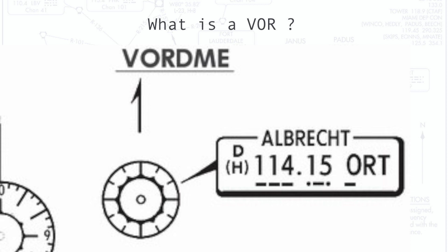ORT is the three-letter identifier. 114.15 is the frequency. Then you have a small 'd' which signifies that the VOR is paired with DME, and the 'H' signifies that this is a high-altitude VOR used for Victor airways.